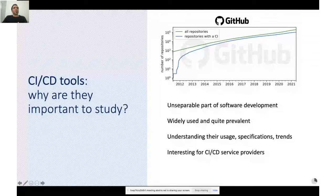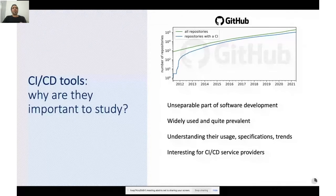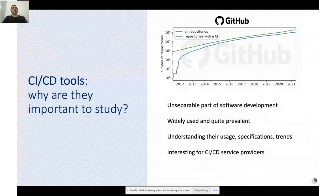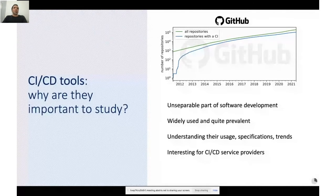Understanding their usage is important because it will allow us to know their specifications and trends, and makes it possible to have a better choice when selecting a CI/CD tool. We found that a lot of studies are mostly about Travis, and we could not find much information about other CIs in the literature. This is also interesting for CI/CD service providers.